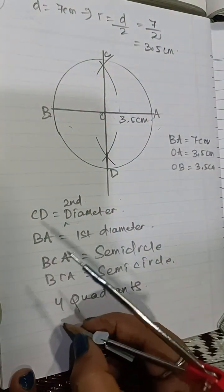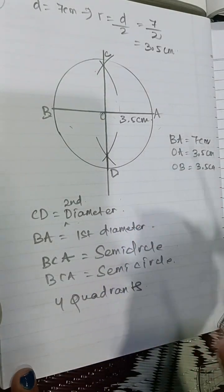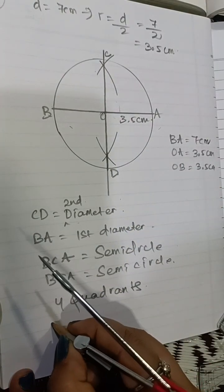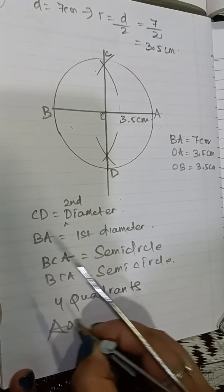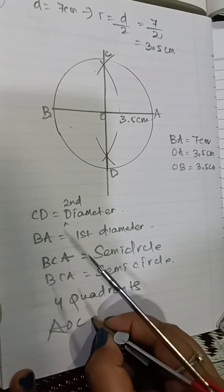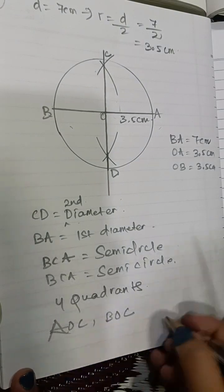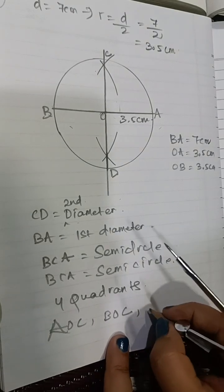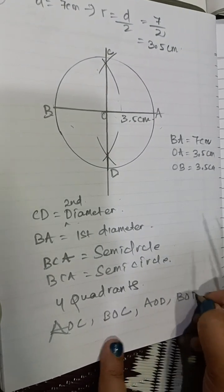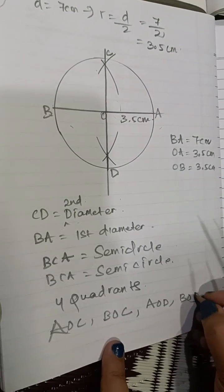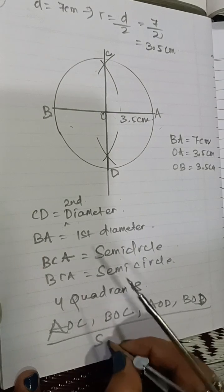And these are the sectors. AOB, AOC, BOC, AOD, and BOD — there are four sectors in this circle.